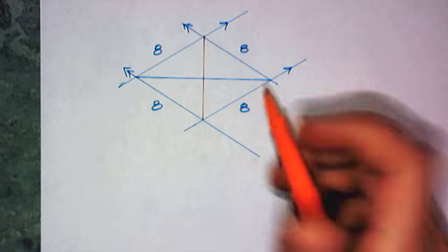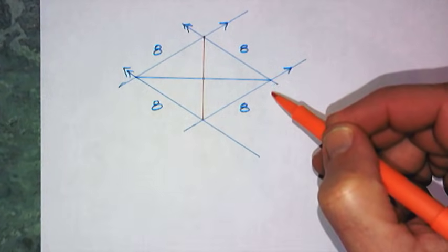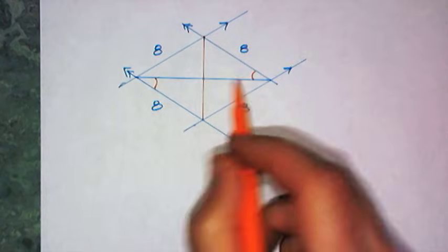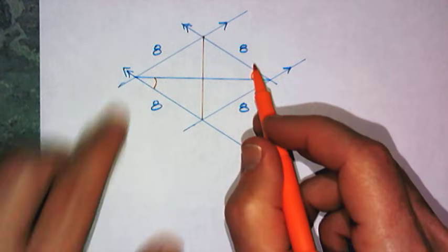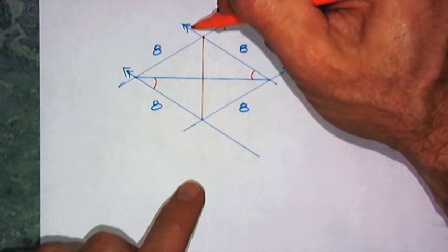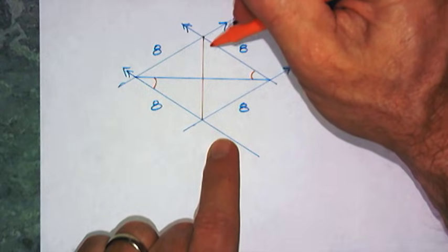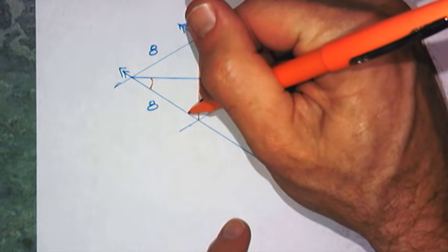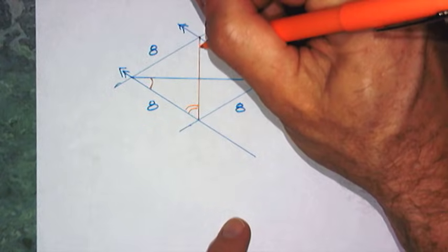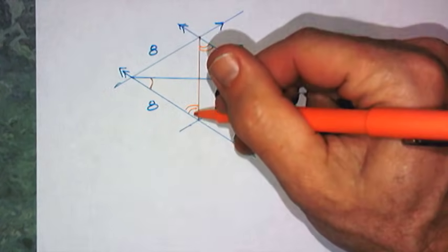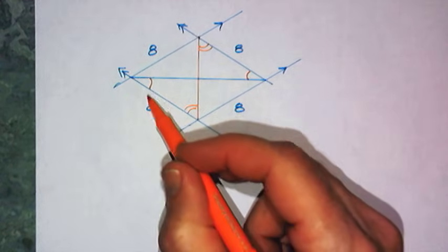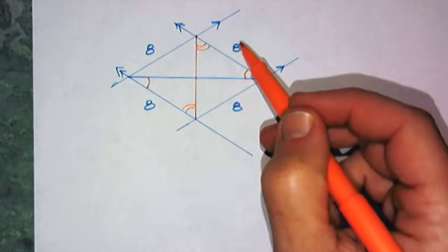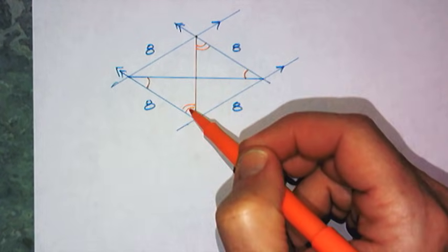Since these lines are parallel, I have some angles that are congruent. This angle must be congruent to this angle — alternate interior angles — because those sides are parallel. And since this line and this line are also parallel, using this diagonal as a transversal, this angle is congruent to this one — also alternate interior angles. You can see that I have formed two triangles that are congruent by angle, side, angle.